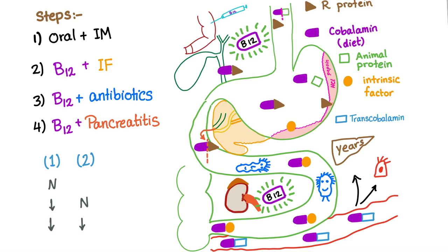So bear with me. Many steps for the Schilling test. First, we give oral vitamin B12 plus intramuscular.